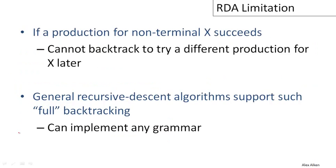So the problem is that if a production for non-terminal x succeeds, there's no way to backtrack to try a different production for x later. Once the function for x is returned, we're really committed to that production.